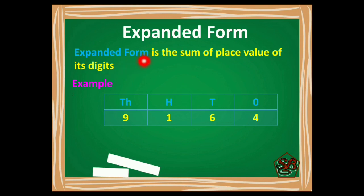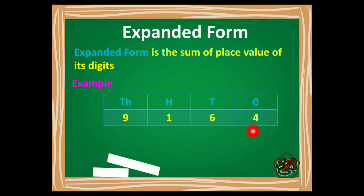Expanded form is the sum of place value of its digits. For example, we are taking the number 9164.